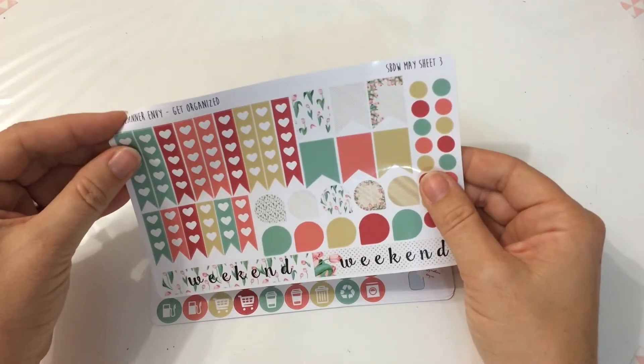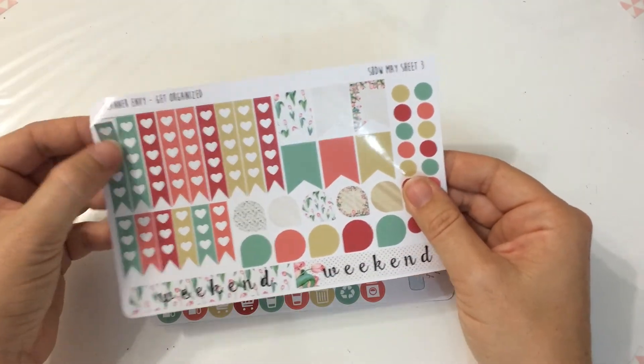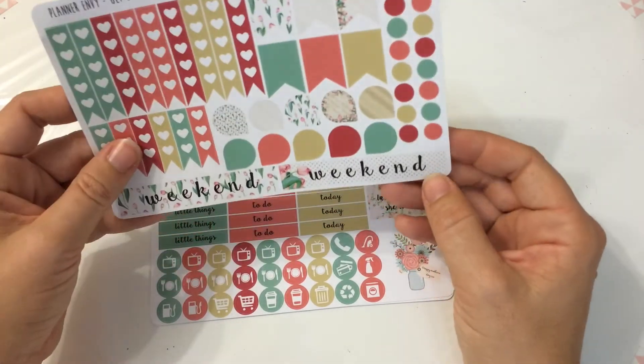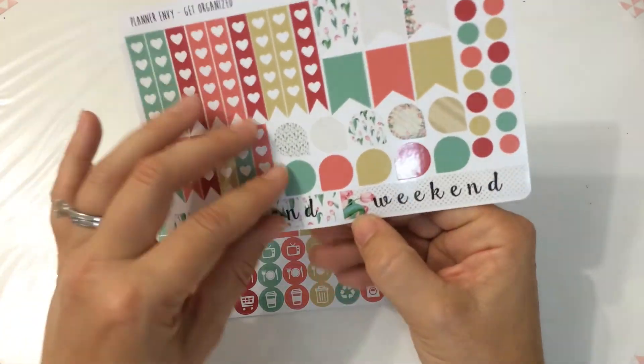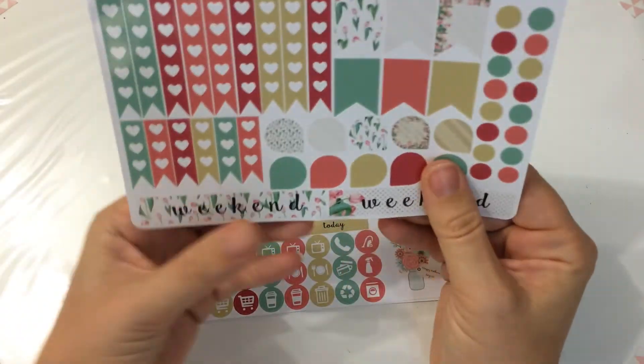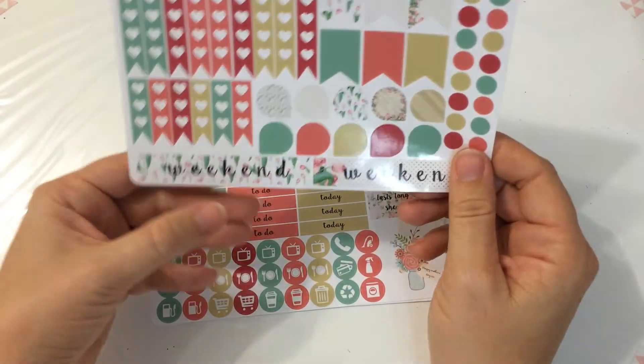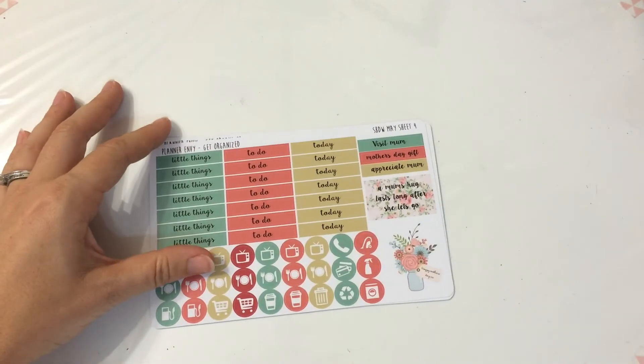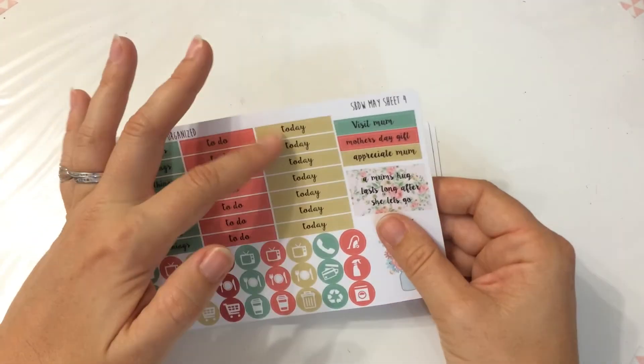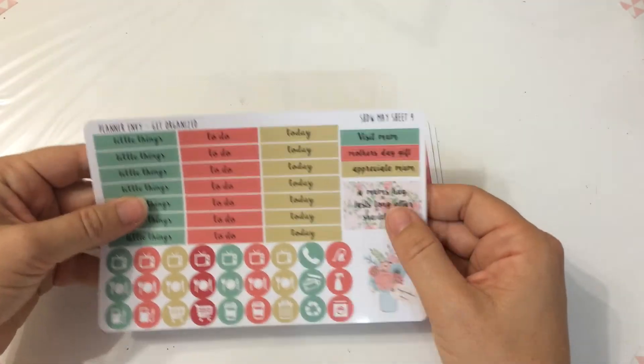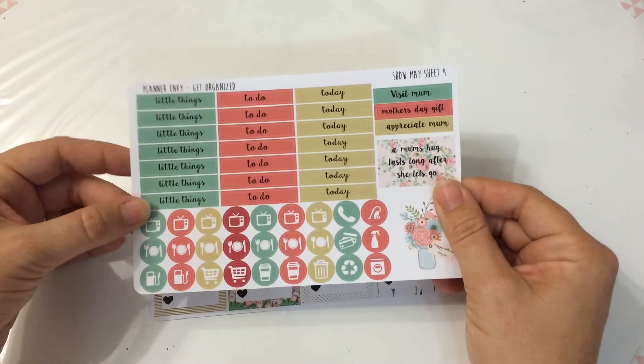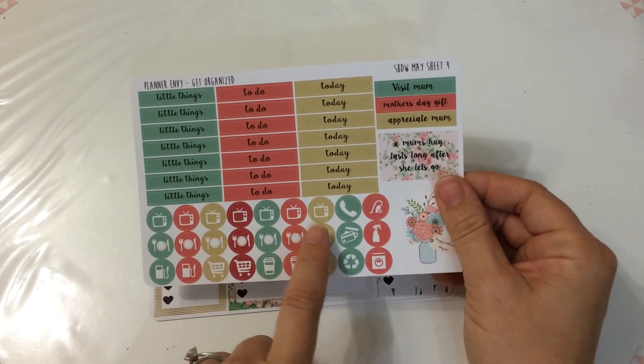This sheet which is all of the checklists, flags, circles, teardrops, some weekend banners. I actually prefer like a weekend banner that isn't just straight like this but these are really pretty too with the flowers in the background. Her header sheet. Little things to do, today. Some things for Mother's Day and a whole bunch of icons.